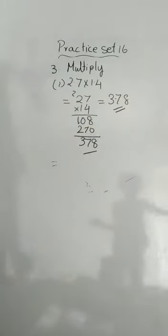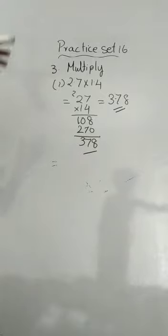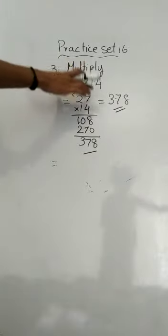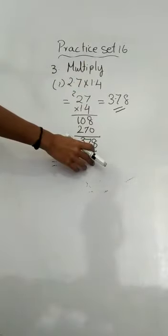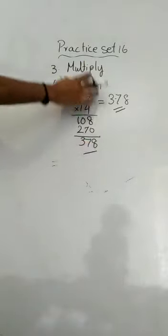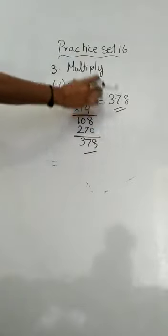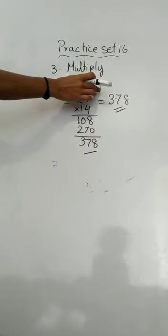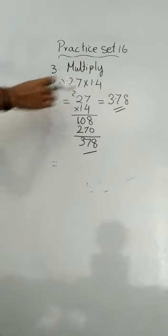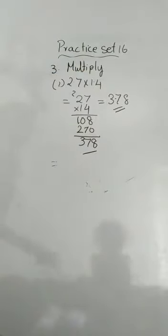This is how you solve it. The method is: first forget the decimal points and multiply, and last you place the total decimal points from both the numbers given into the answer.